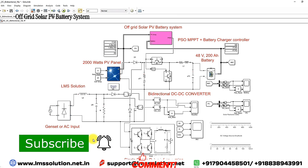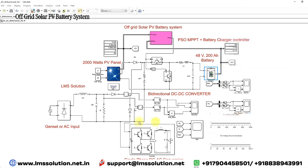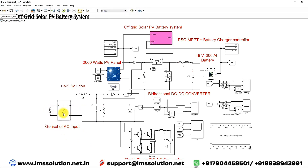Here we are using a 48-volt battery with a rated capacity of 200 Ah. We are using AC input — that means a generator set or AC input. This AC input will be converted into DC by using a rectifier.